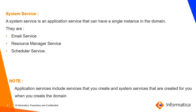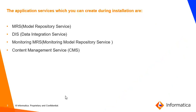System services are: Email Service, Resource Manager Service, and Scheduler Service. Application services are those which need to be created after the domain is installed, while system services are already present in the domain and need to be enabled, disabled, and configured. The four services that can be created during installation are: up to version 10.2 HF2, only MRS, DIS, and Monitoring MRS. From 10.4, we are also able to create Content Management Service.